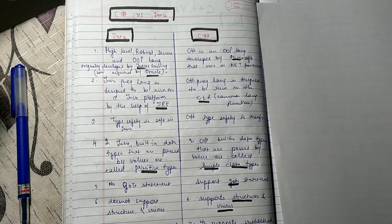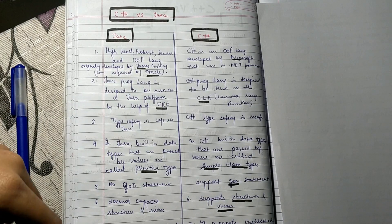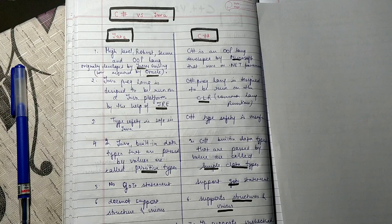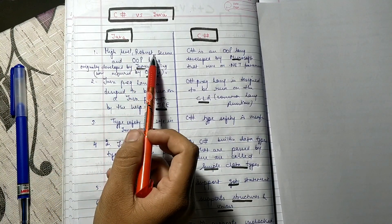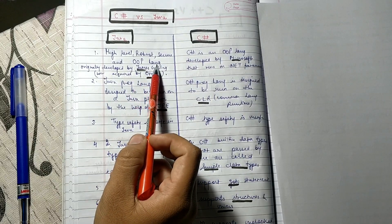Hello guys, welcome to my channel. My name is Abhishek and now we'll discuss C# versus Java. What is the difference between the two languages? First of all, Java is a high-level, robust, secure, and object-oriented programming language.